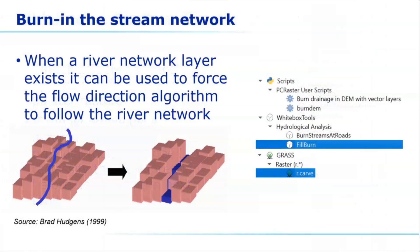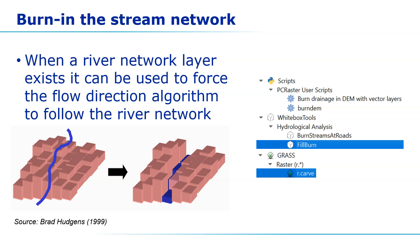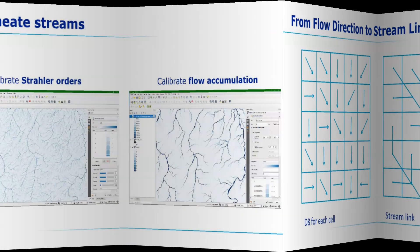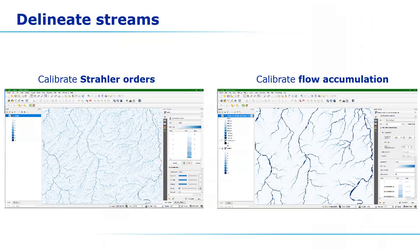If you have a river network layer available, you can make the flow directions more realistic by burning in the river network in the DEM. There are different tools you can use: Whitebox Tools has the Fill Burn algorithm, GRASS has r.carve, and there are some custom PCRaster user scripts you can download through the resource sharing plugin. After calculating all the flow directions, we can connect the arrows and create the stream link, which already gives us an idea about the streams. The next step is to delineate the streams, and we can use two different methods: Strahler orders or flow accumulation.